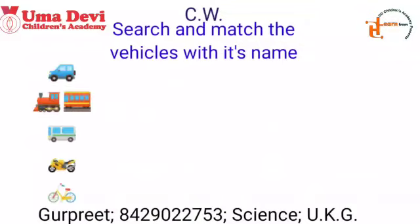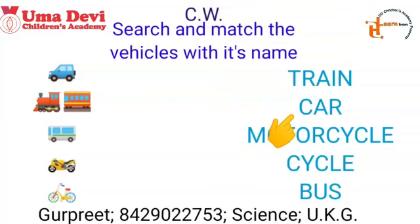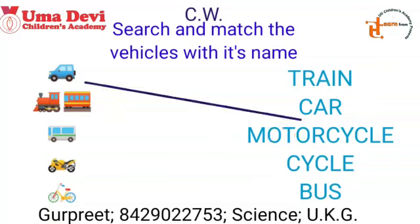So kids, draw this worksheet. Now tell me which vehicle is this? Yes, this is car. Search the name of car on the other side — C-A-R. Now match the car with its name. Like this, you have to match all the vehicles with their names by your own.